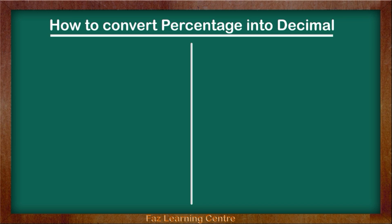My first percentage is 28%. In order to convert 28 into a decimal we need to divide it by 100. So I am going to write this down: 28 divided by 100.